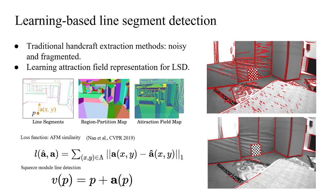For 2D line detection, we compare traditional handcrafted line detection methods and also learning-based methods. The results of traditional methods are very noisy and the lines are fragmented. For the learning-based method, the results are much better, so we use it here. The general idea is to transfer line detection to a pixel attraction field problem. For each pixel in the image, we calculate the attraction vector from that point to the nearest line segment. The network learns two attraction field maps representing the x and y distances of each pixel to the nearest line segment. Finally, a squeeze module is used to cluster the line points.